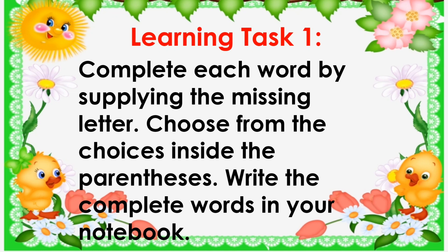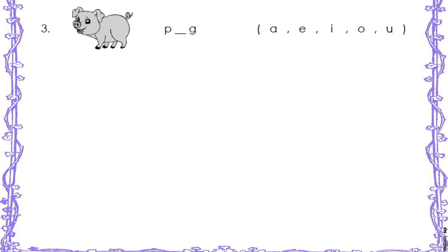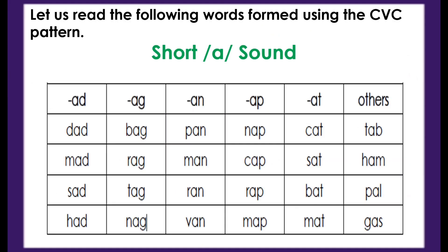Very good! Learning Task 1: Complete each word by supplying the missing letter. Choose from the choices inside the parenthesis. Write the complete words in your notebook. Kids, read the following words formed using the CVC pattern. I want to hear your big voice.